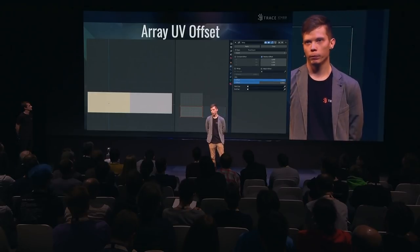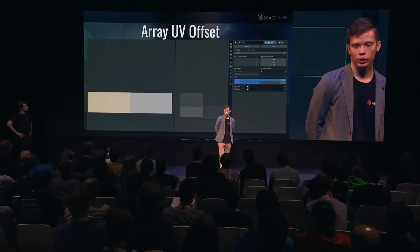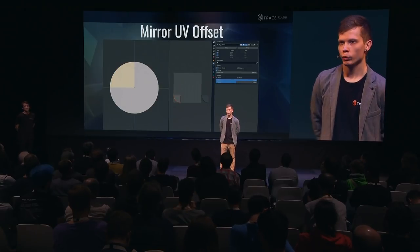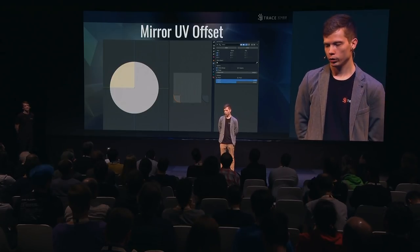Now let me talk about new modifier features in 2.8. The first one is UV offset. It's important because when you use the Array modifier and get overlapping UVs, you get baking errors. This is a great way to avoid that because you don't need to collapse the modifier and move your UVs outside of 0-to-1 space — you just offset it by a margin of 1 and you're good to go. Mirror UV offset is the same feature for the Mirror modifier, and again it's a great way to get cleaner bakes when working with mirror geometry.